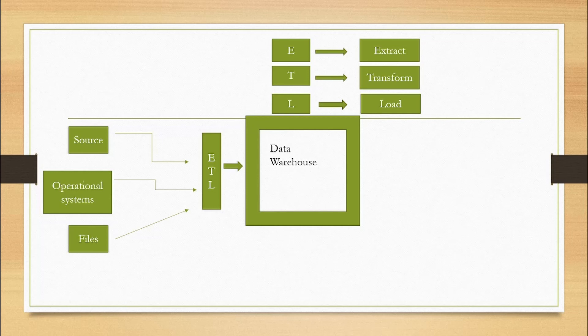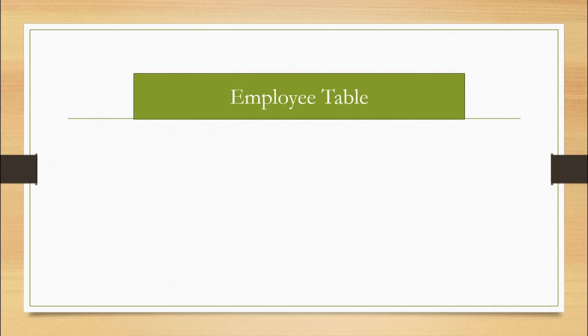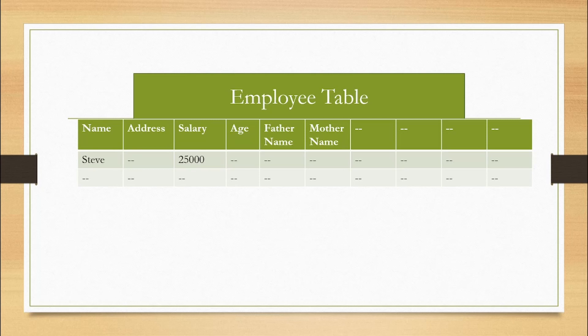Now let's talk about non-volatile. Let's say we have an employee table with columns like name, address, salary, father's name, mother's name, and so on. If we want to change the salary from 25,000 to 12,000 without any valid reason, we can't do it — because without a valid reason, why would we change the salary of any employee? This means data has to be non-volatile: without any valid reason, we cannot change the data.